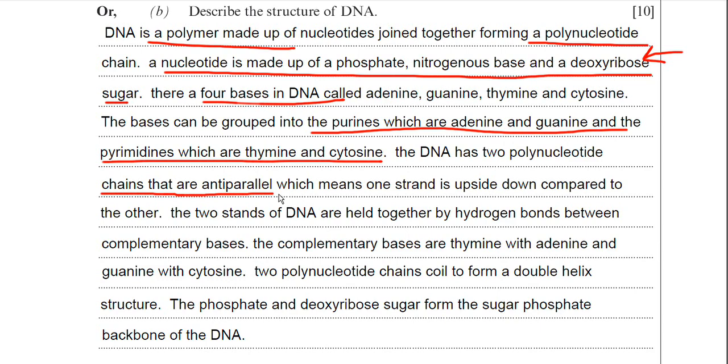I've said that the polynucleotide chains run anti-parallel to each other which means one strand is upside down compared to the other. I've said the two strands are held together by hydrogen bonds between complementary bases. Then I've stated the complementary bases: thymine with adenine and guanine with cytosine. I've said the two polynucleotide chains coil to form a double helical structure. The phosphate and deoxyribose sugar form the sugar phosphate backbone of DNA.